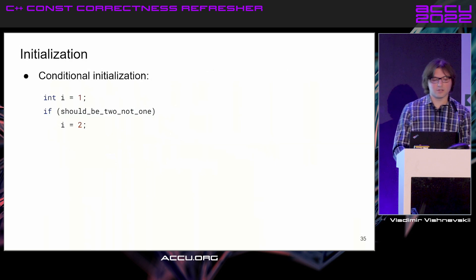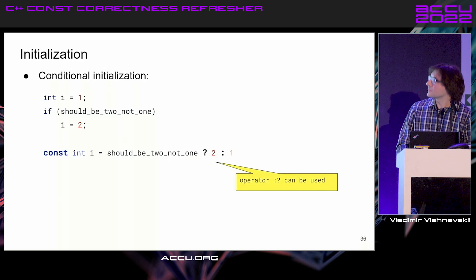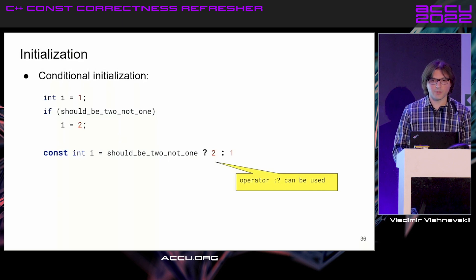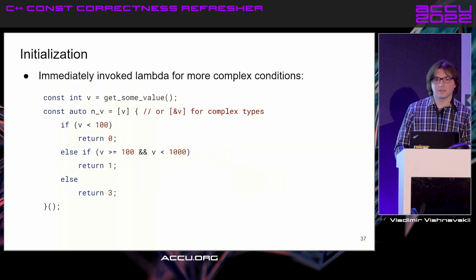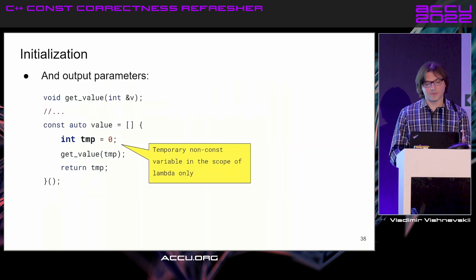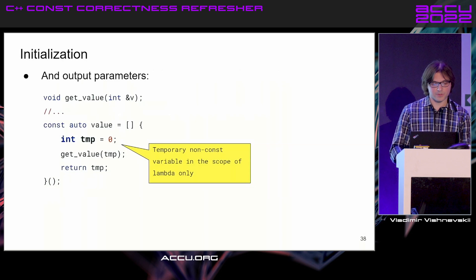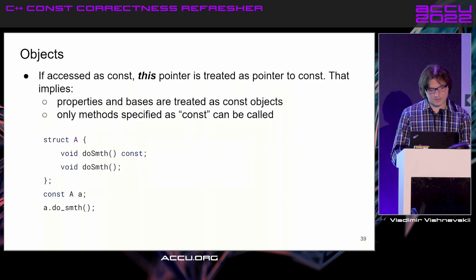Some use cases inhibit const correctness, such as conditional initialization — where we have a default value and reassign it depending on a condition. The ternary operator can improve this situation. For more complex expressions, immediate lambda invocation can help: we call a lambda immediately and assign the result to a const. This is also useful for functions with output parameters — wrapping the call in a lambda allows assigning the result to a const, and the lambda call will be optimized out.